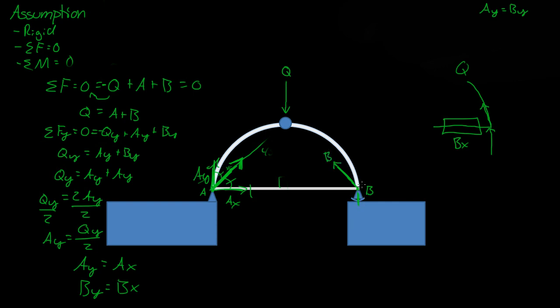The rocker provides the Y component of B. And this beam provides the X component of B.